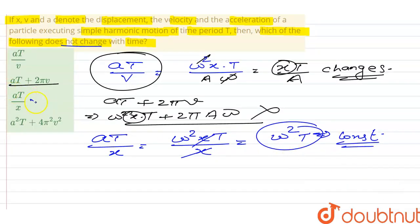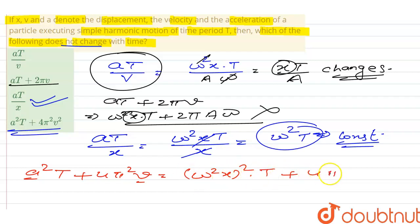So our third option is absolutely correct. Now if we talk about the fourth option, this is a square T plus 4 pi square v square. Put the value of acceleration and velocity here. Acceleration is omega square x, the whole square into T, plus 4 pi square, and v velocity is a omega.